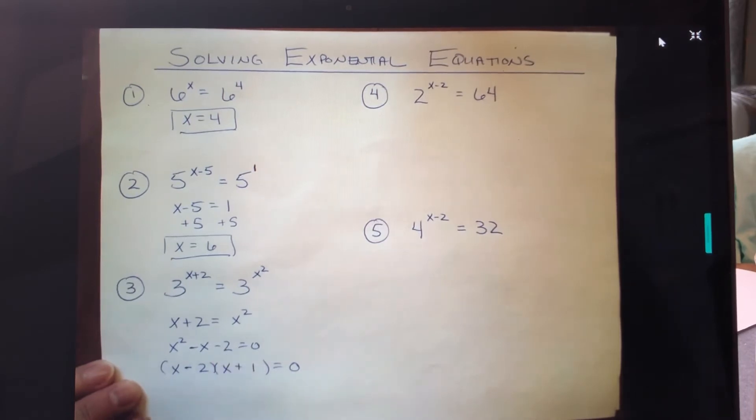The interesting thing about this problem—because it was a quadratic—that means I actually have two potential answers. The zero product property allows me to take each one of these factors, one at a time, set it equal to zero, and then solve the subsequent algebraic problem. So here I'm going to get x equals 2, and the second one I get x equals negative 1. So this problem actually has two answers.